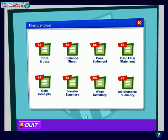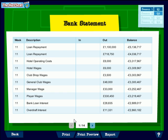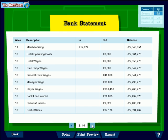Another really important part of the finance folder is the bank statement. It's important to keep a close eye on the cash in the business. The bank statement gives you a week-by-week summary of the ins and outs of cash flows, so you can see exactly where your money is coming from and where it's going to.